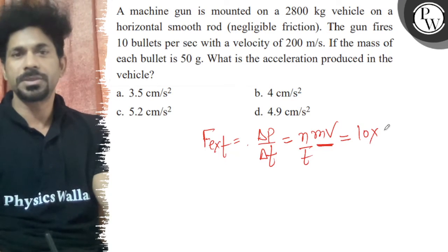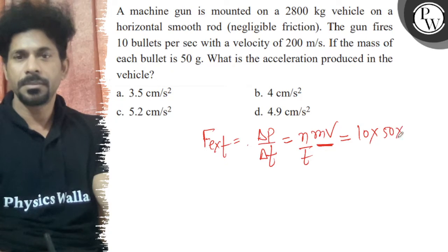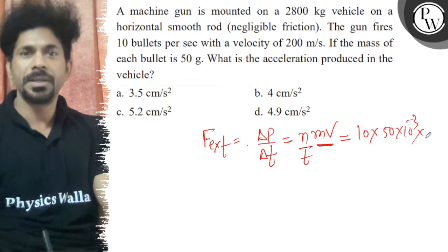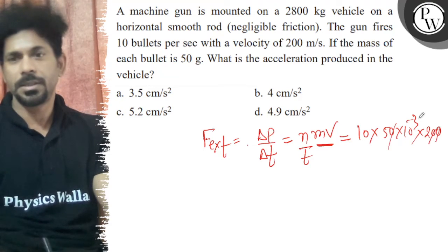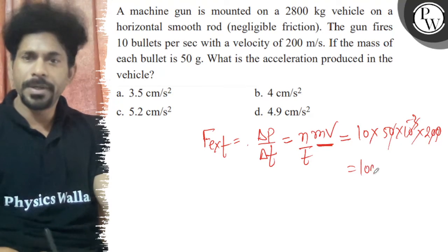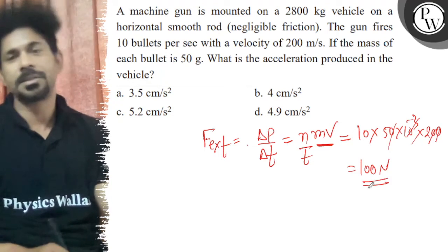The mass of one bullet is 50 gram and v is 200. So if we solve this, I will get 100 N. So we will get 100 N as the force exerted on the vehicle.